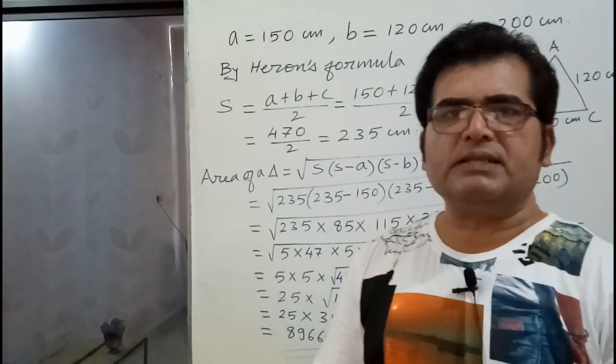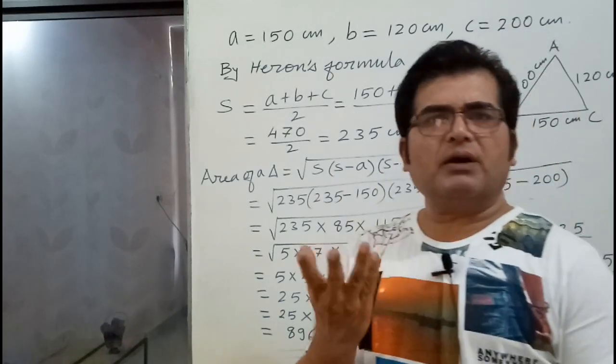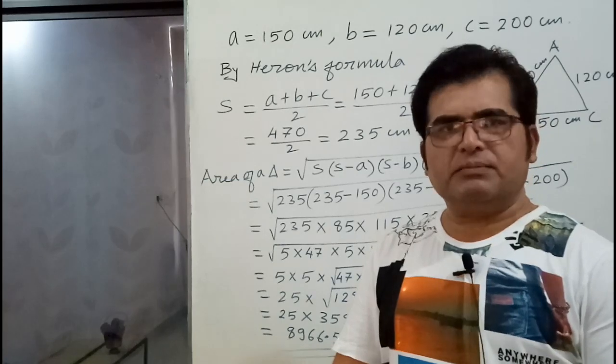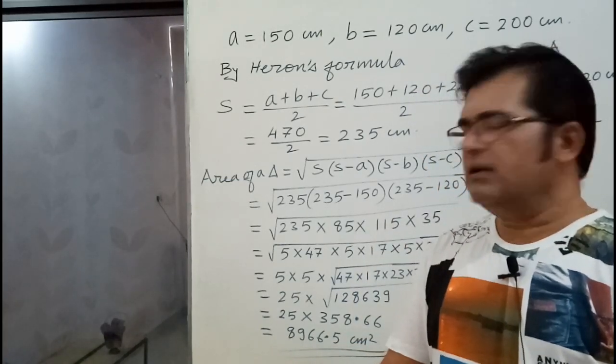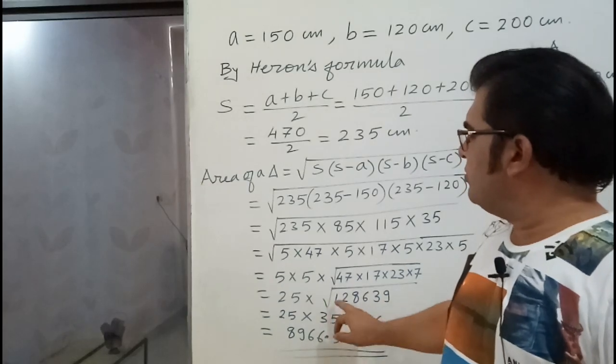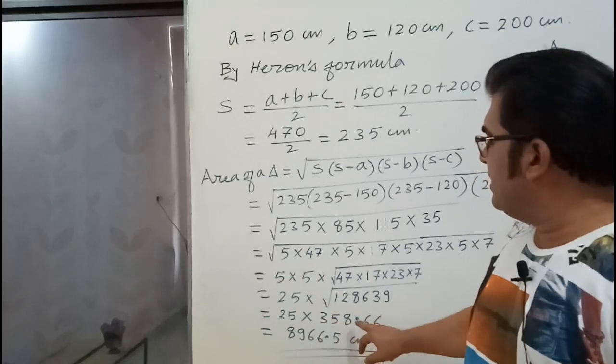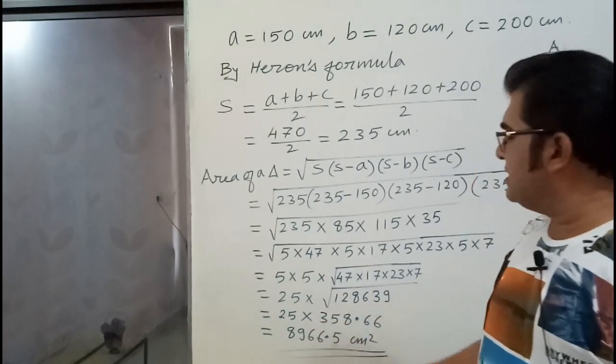To find correct to 2 places of decimal, you have to find up to 3 places of decimal. Then, you round up. That method already I have explained in my previous video. You can see, watch the video and learn it. The square root of 128,639 is 358.66.